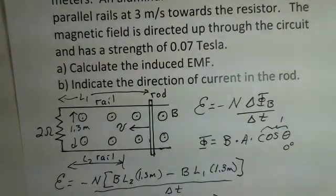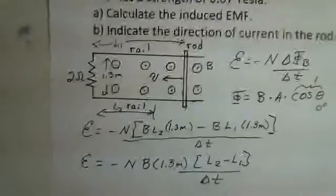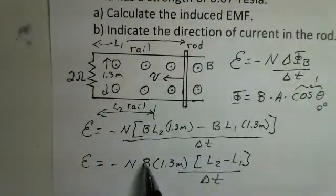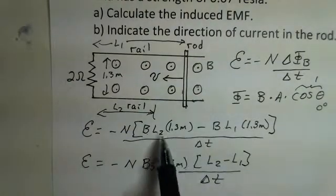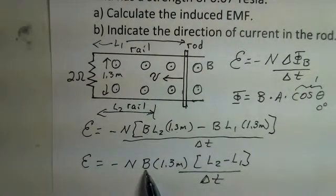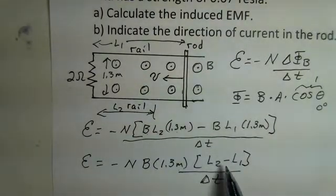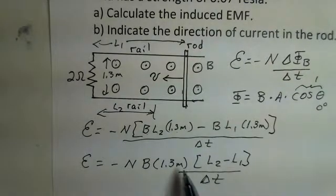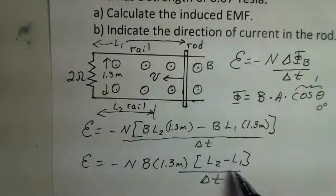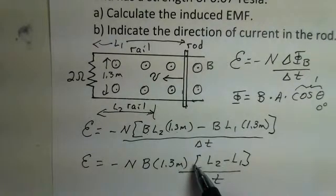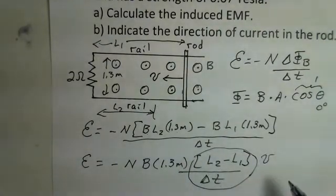How would you interpret L2 minus L1? I factored out the common factors. The B is the same in both terms. The 1.3 meters appears in both terms. So our delta reduces to length 2, our final position, minus our length 1, the initial position, divided by delta T. Well, if you notice, this is meters per second. This is the velocity of the rod, the number of meters per second that it covers. So let's put in the numbers.